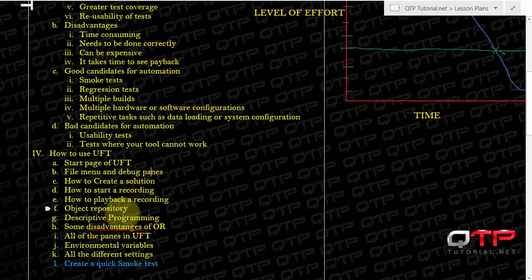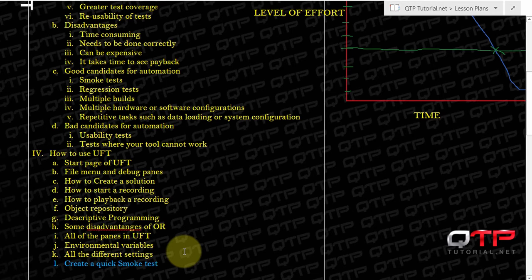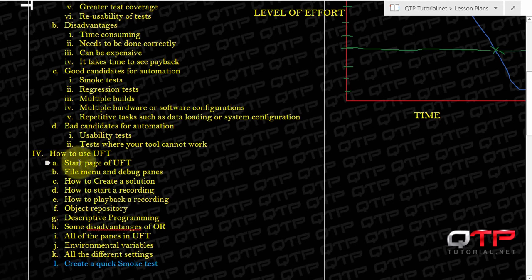Then we continued with teaching you guys the object repository along with some quick descriptive programming. Then we told you about some disadvantages of the object repository. After that, we discussed all of the panes in UFT. We talked about things such as environmental variables, and we talked about how to change all of the different types of settings in UFT. We probably covered much more that I don't have listed here, but that's for you to go and check out the tutorials.